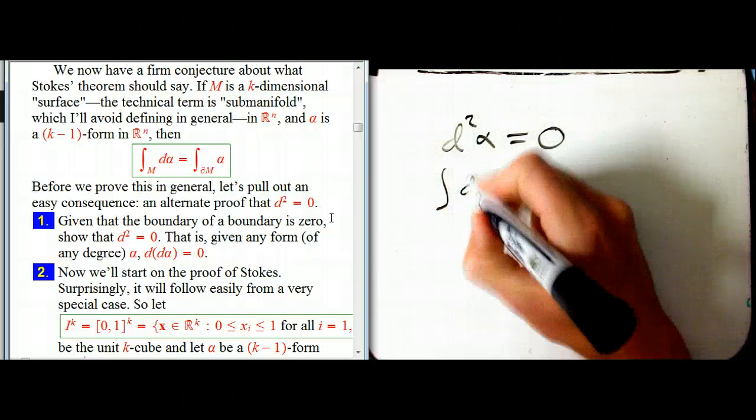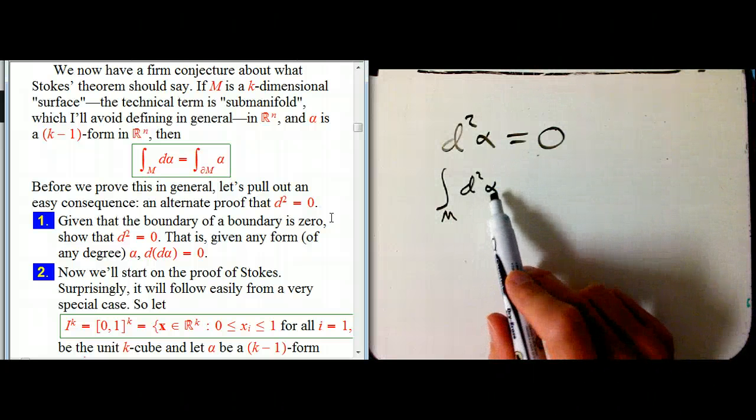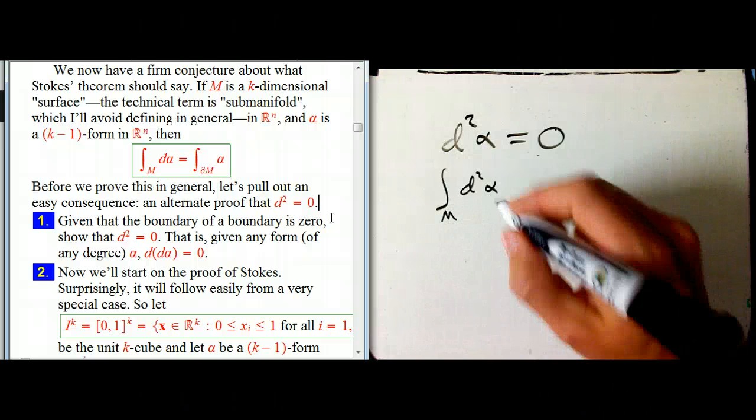What we're going to do is we're going to take d squared alpha and we're going to take any old object that we could integrate that over. So if alpha is a k form, this is going to have to be a k plus two surface, sub-manifold, whatever you want to call it.